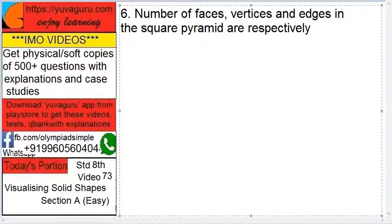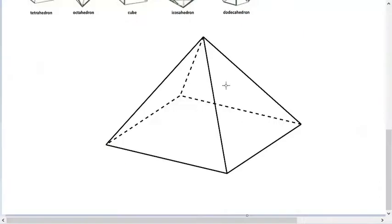Number of faces, vertices and edges in a square pyramid are respectively. Now what is the square pyramid? This is the square pyramid. Pyramid means basically always remember Egypt, all those pyramids, and square means the base should be square. So how many faces does it have? 1, 2, 3, 4 above and the base below, so 5 faces.